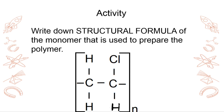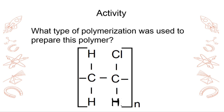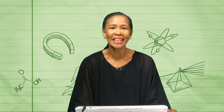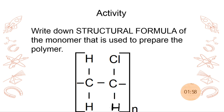There's an activity now so that you really try to understand the information and what type of questions you can come across in examination. You've got a structural formula of the monomer — you have to write down the structure of the monomer used to prepare the polymer shown. And you will have another question: what type of polymerization was used to prepare this polymer? Take two minutes to try that.